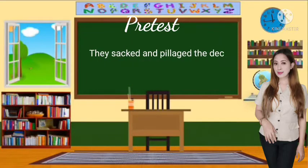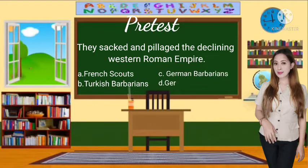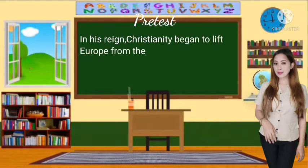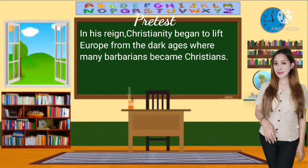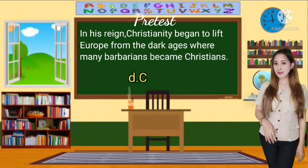Question 3: They sacked and pillaged the declining Western Roman Empire. A. The French Scouts, B. The Turkish Barbarians, C. The German Barbarians, D. The German Barbarians. The answer is Letter C, The German Barbarians. Question 4: In his reign, Christianity began to lift Europe from the Dark Ages where many Barbarians became Christians. A. Charmeline, B. Constantine, C. Claudius, D. Clovis. The answer is Letter D, Clovis.